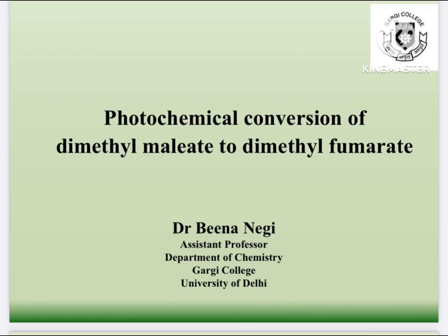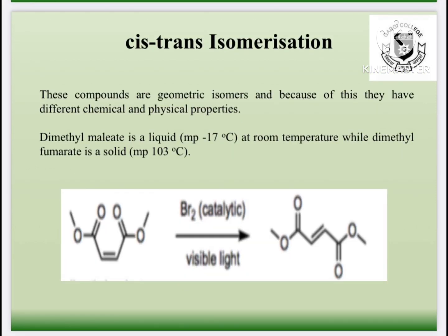Hello everyone, this is my YouTube channel. In this video we are going to see the photochemical conversion of dimethyl maleate to dimethyl fumarate. These are cis-trans isomers. This isomerization takes place in presence of bromine and sunlight.